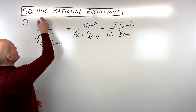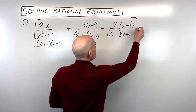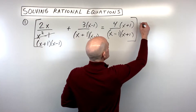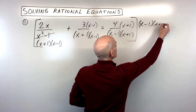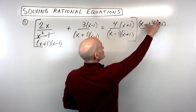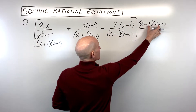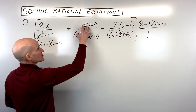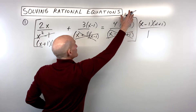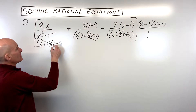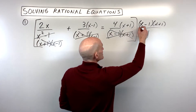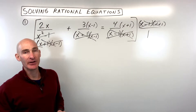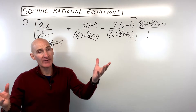What we're going to do now is clear the denominators, meaning we're going to multiply this whole equation — both the left side and the right side — by this common denominator, which is x minus 1, x plus 1. You can think of this as being over 1. If you distribute this to each fraction, you can see that x minus 1, x plus 1 cancels out each denominator. So you're clearing the denominators by multiplying through by the common denominator, keeping the equation balanced because you're doing it to both sides.